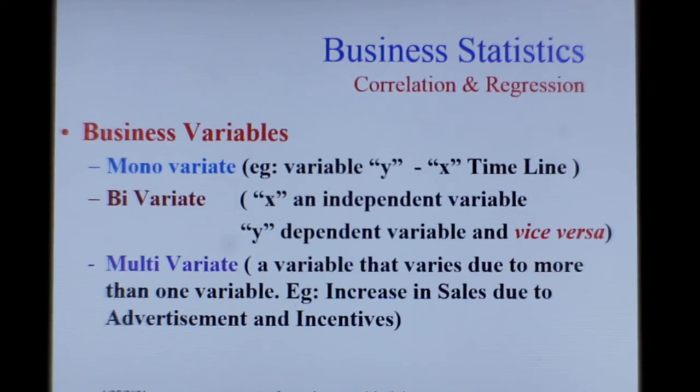In monovariate, the variable is y which is a dependent variable, and generally the timeline is the x variable. In bivariate it is both x and y. X may depend on y or y may depend on x. Rather, in bivariate x is an independent variable and y is a dependent variable, and vice versa. In multivariate, a variable varies due to more than one variable. An increase in sales, for example, can be due to advertisement or certain incentives paid to the sales guys also.